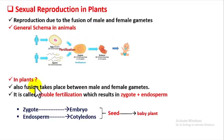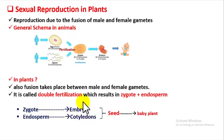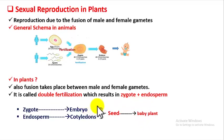Now what about plants? In plants there also occurs fusion between male and female gametes, but here the fertilization is called double fertilization and it yields two products unlike animals — that is zygote and endosperm. The zygote undergoes rapid cell division and forms an embryo, and the endosperm forms cotyledons. These two structures together form a seed, and this seed upon germination produces a baby plant.